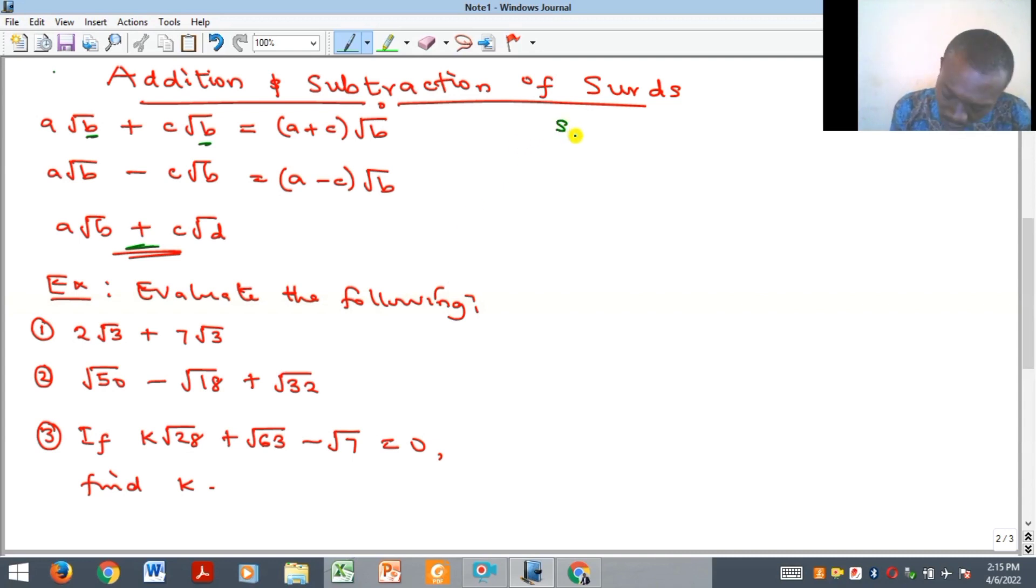So the number one says we should evaluate 2√3 plus 7√3. And so straight away, these are similar surds. All we need to do is to add the coefficients. And so 2 plus 7 will give us 9. And then we take our root 3. And so this is just our answer.